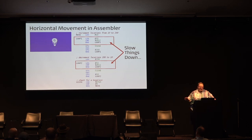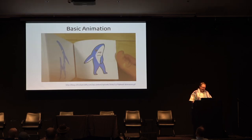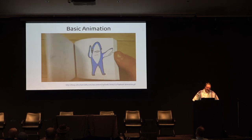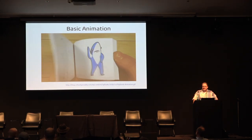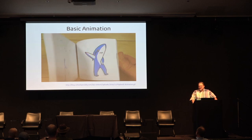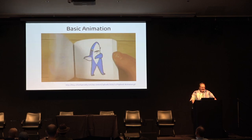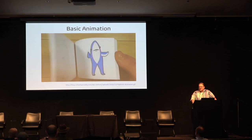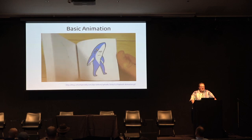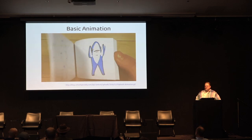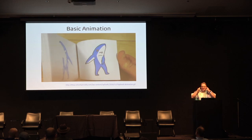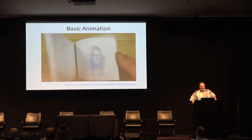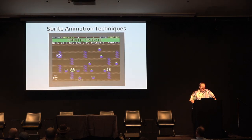BASIC is okay for a lot of things, and most of the samples we'll talk about will be in BASIC. Basic animation has been around for hundreds of years — it's a flip book. It's a series of images where each image is a little bit different, so when you show them really fast to the human eye, it looks like it's moving.